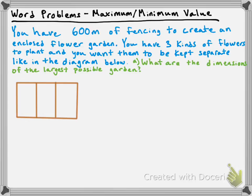Just before we get to the question, I want to remind you that when you're finding the maximum or minimum value of a parabola or a quadratic function, what you're really doing is you're finding the y-value of the vertex. So you're dealing with the vertex, but specifically the y-value. Oftentimes, the whole goal is to find the y-value of the vertex somehow.